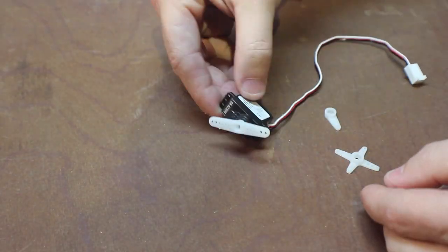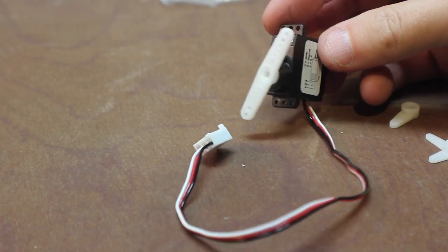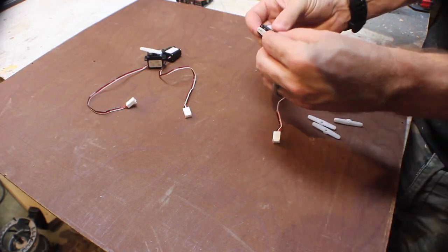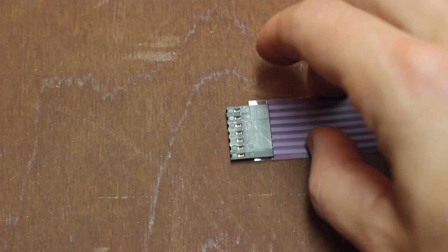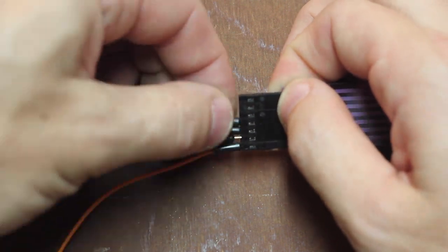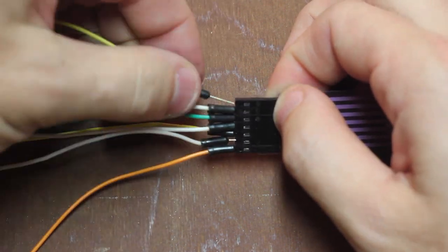Each servo comes with three different arms, and I use this straight arm. So just go ahead and add those to each one of the servos. They just push right on. Then you want to add individual wires into the header of the keypad. This is how you're going to connect it to the Arduino.